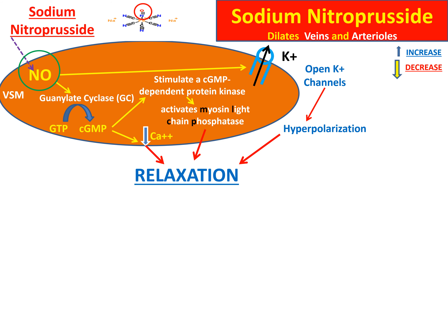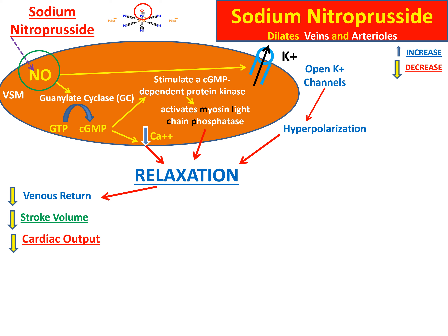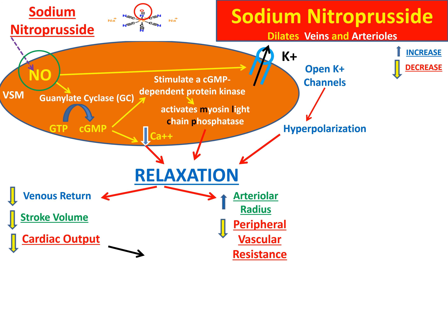All these effects lead to relaxation in the vascular smooth muscle, which is more pronounced in the veins than the arteries. This leads to a decrease in venous return, stroke volume, and cardiac output. Arterial dilation increases arterial diameter, reducing peripheral vascular resistance. Together, reduced peripheral vascular resistance and decreased cardiac output lead to a decrease in blood pressure.